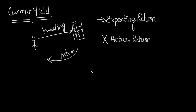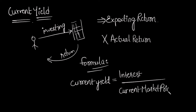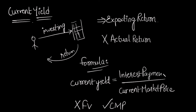If I discuss the formula, you will understand it more clearly. The formula for current yield is: Current Yield = Interest / Current Market Price. Here, he is assuming his return based on the current market price — not the face value. He is completely considering the current market price. Based on the interest payment and the current market price, he is expecting his return on investment.